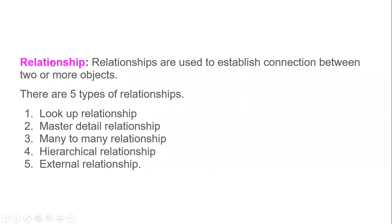First, we need to know that relationships are used to establish a connection between two or more objects. From the past couple of days we have been going through all these relationships, so we have a better idea. The relationship types include: lookup relationship, master-detail, many-to-many, hierarchical, and external relationships. Today I'm going to go through lookup relationship and master-detail relationship only.